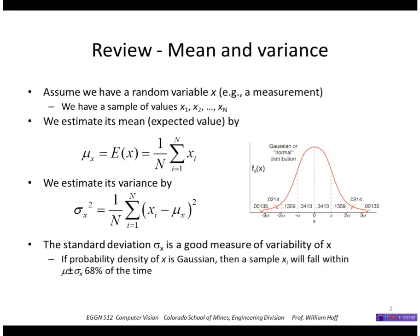And if we take the standard deviation or the square root of the variance, that's a good measure of the variability of our random variable. So assuming that our probability density of x was Gaussian, then it would follow a normal bell-shaped curve like this.